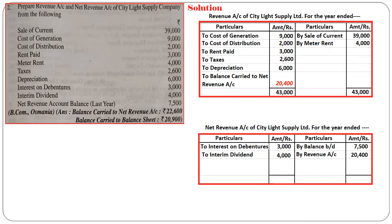The balance carried to net revenue account — Rs. 20,400 — is credited in net revenue account. The net revenue account credit side totals Rs. 27,900, written on both sides. The balancing figure on the debit side is Rs. 20,900, written as balance carried to general balance sheet. Note: the answer given in the textbook for this question is different — that answer is wrong; this answer is correct.